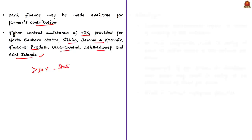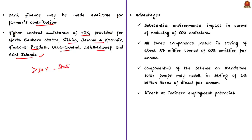Let us see the advantages of implementing this scheme. It will have a substantial environmental impact in terms of reducing CO2 emissions. All three components of the scheme will result in saving of about 27 million tons of CO2 emissions per annum. Further, Component B on standalone solar pumps may result in saving of 1.2 billion liters of diesel per annum and associated savings in foreign exchange due to reduction of crude oil imports. The scheme will also have direct and indirect employment potential.